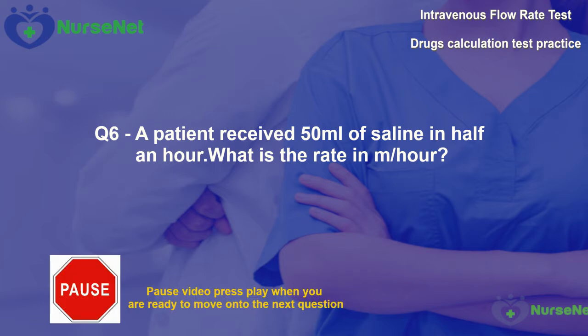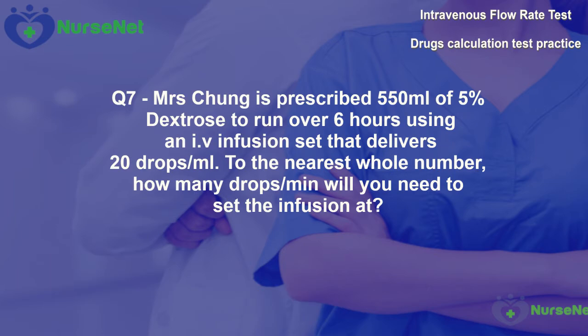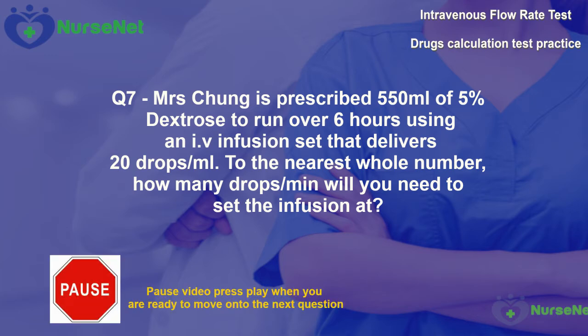Question 7. Mrs Chung is prescribed 550 millilitres of 5% dextrose to run over 6 hours using an infusion set that delivers 20 drops per millilitre. To the nearest whole number, how many drops per minute will you need to set the infusion at?